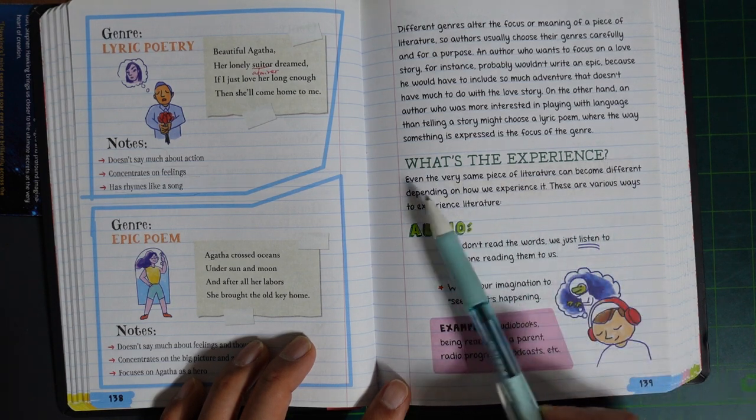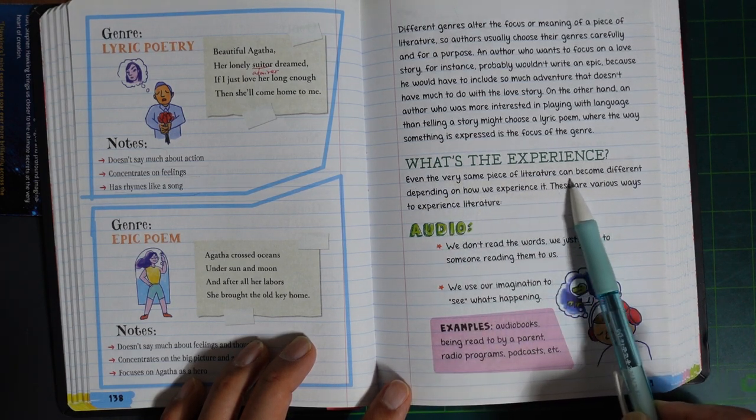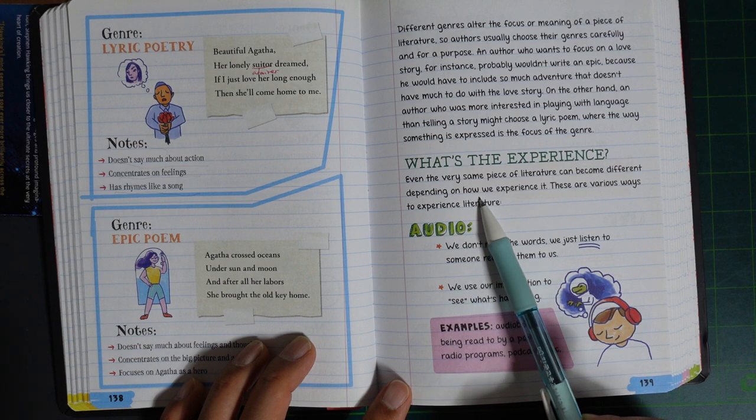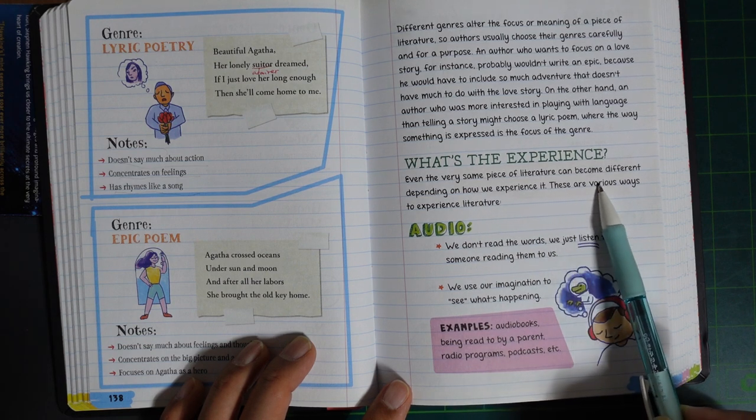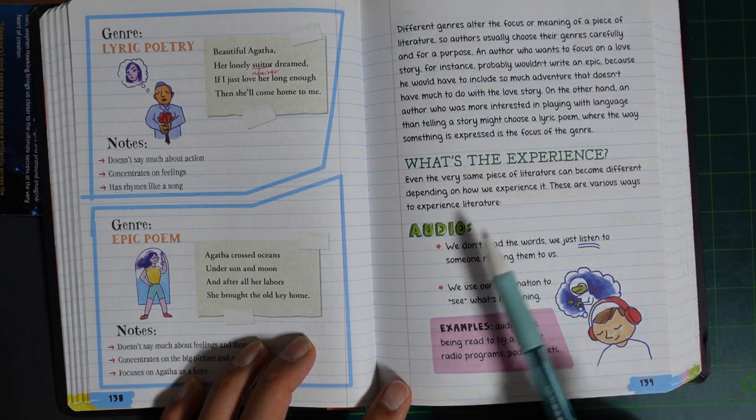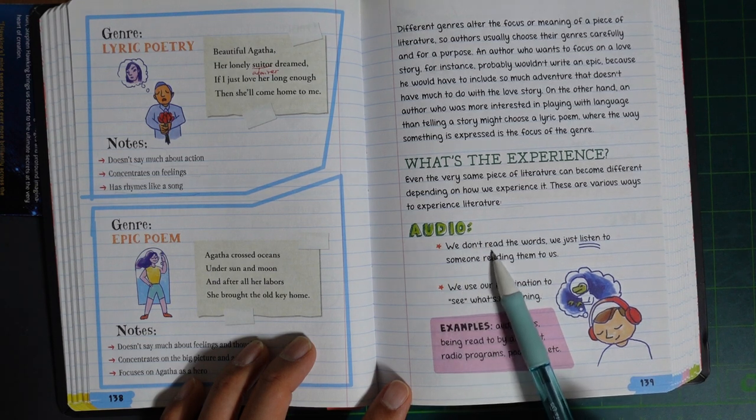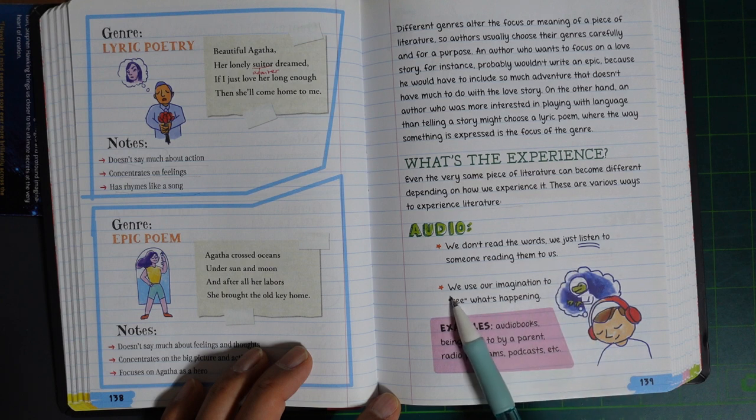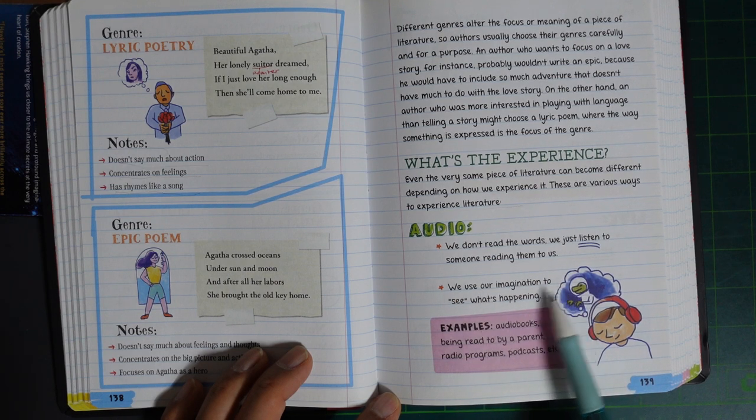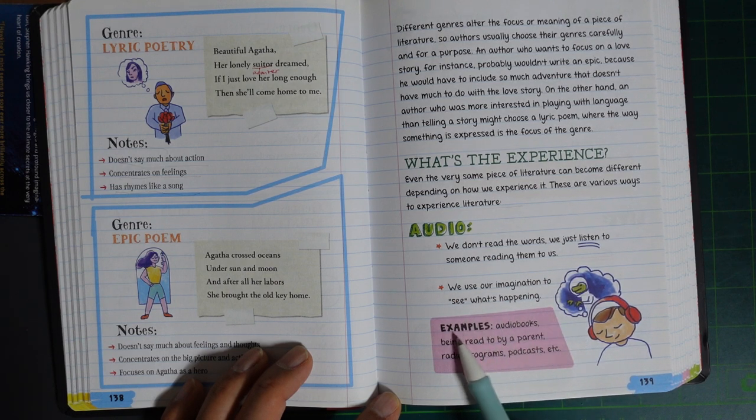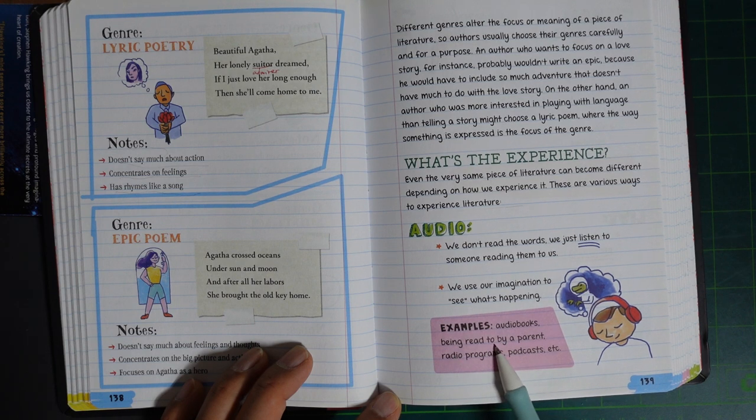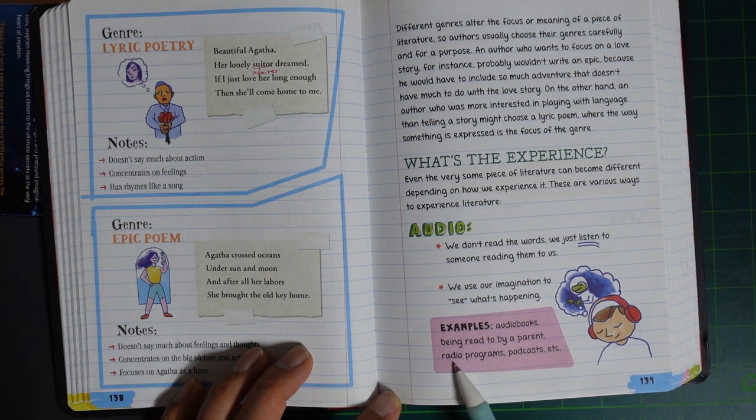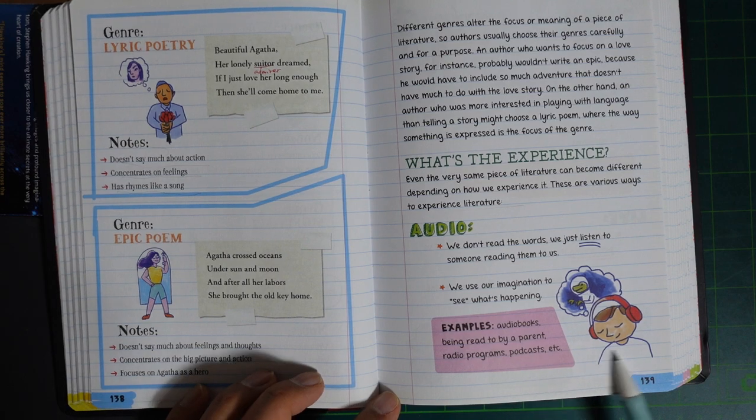What's the experience? Even a single piece of literature can become different depending on how we experience it. There are various ways to experience literature. Audio: We don't read the words. We just listen to someone reading them to us. We use our imagination to see what's happening. Examples: Audiobooks, being read to by your parents, radio programs, podcasts, etc.